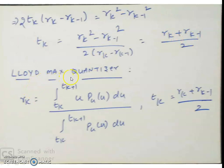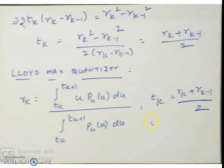Summary of the Lloyd-Max quantizer: Rk = [∫Tk to Tk+1 u·pu(u) du] / [∫Tk to Tk+1 pu(u) du], and Tk = (Rk + Rk-1) / 2. Depending on pu(u), the reconstruction levels change. Tk is always the average of Rk and Rk-1.